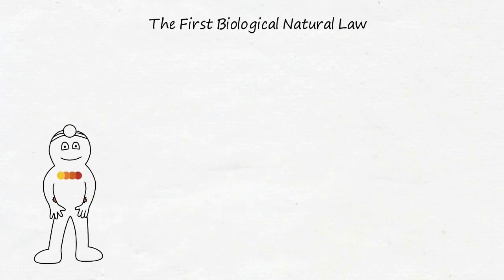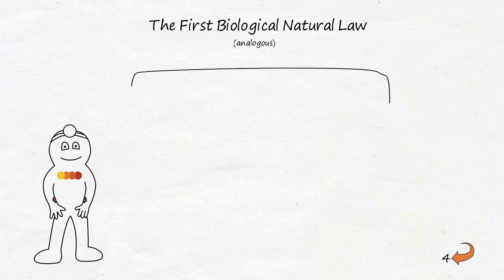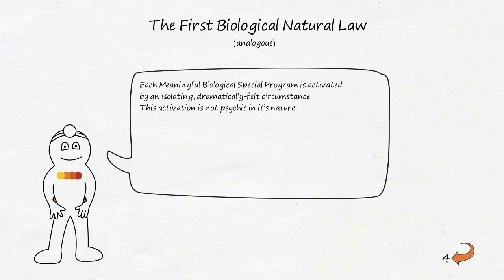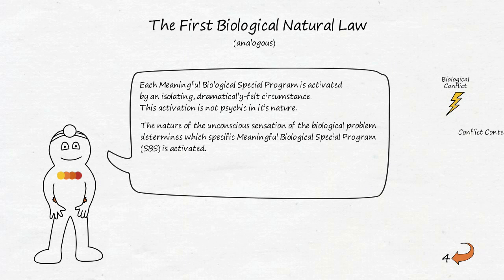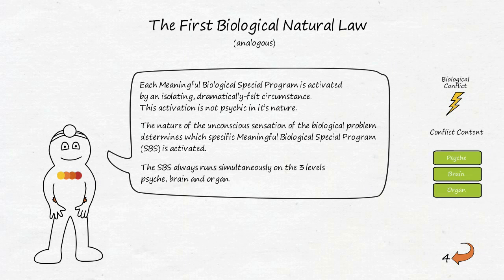All this is encapsulated in the first biological natural law, which summarizes the following three criteria. Each meaningful biological special program is activated by an isolating, dramatically felt circumstance. This activation is not psychic in its nature. The nature of the unconscious sensation of the biological problem determines which specific, meaningful biological special program, SBS, is activated. The SBS always runs simultaneously on the three levels: psyche, brain, and organ.